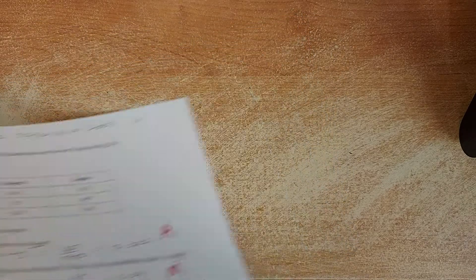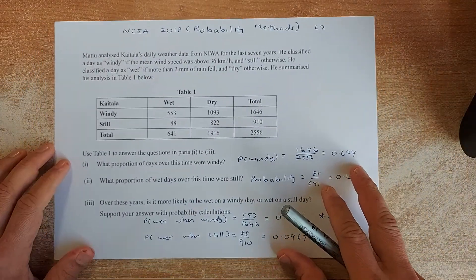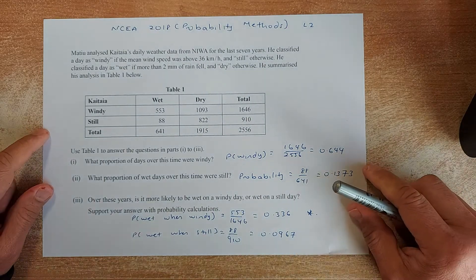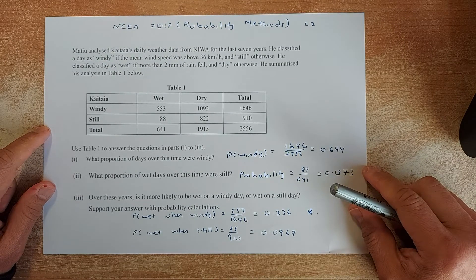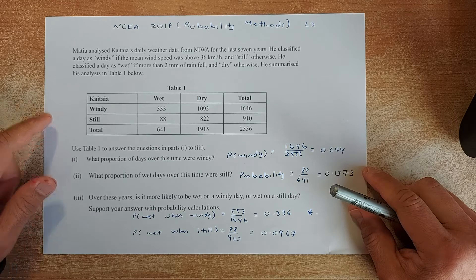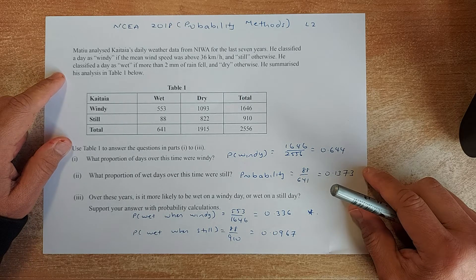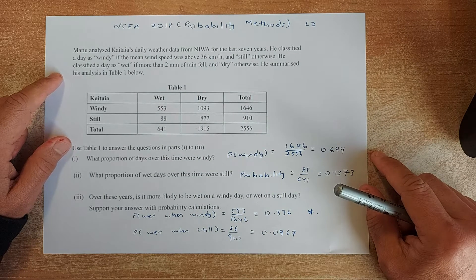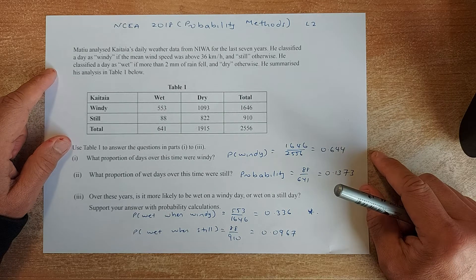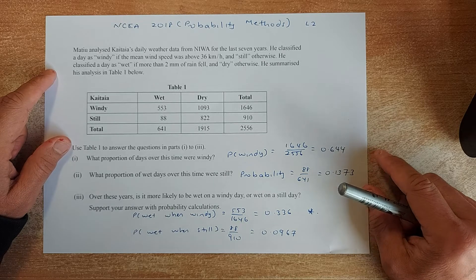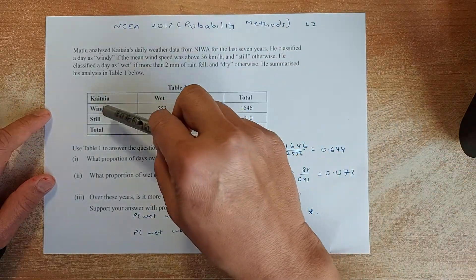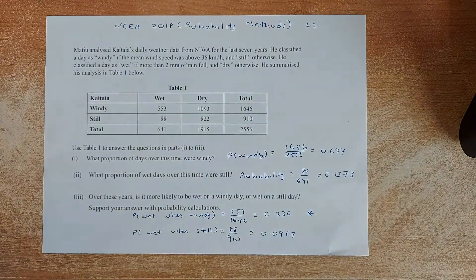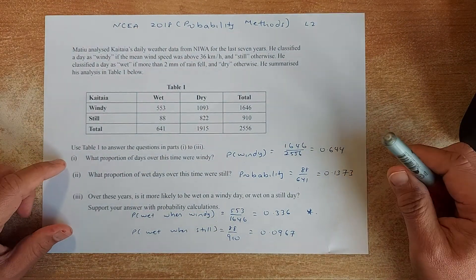Great. Now we shall look at the question on level 2. Level 2, the probability paper is called probability method. Matthew analyzed Kaitaya's daily weather data from the NIWA for the last 7 years. He classified the day as windy if the mean wind speed was above 36 km per hour, and still, it is otherwise. He classified the day as wet if more than 2 mm of rain fell and dry otherwise. He summarized the analysis in the table below. So wet or dry, windy and still. So again, the row total is given, the column total is given. So your job is done. So now we shall answer question 1, 2 and 3. It's very simple.